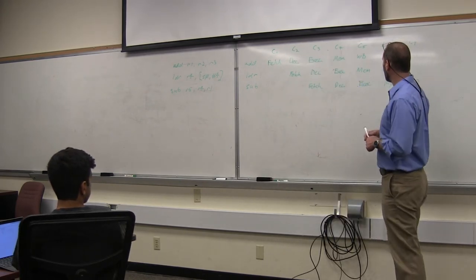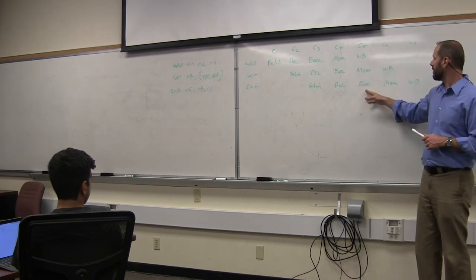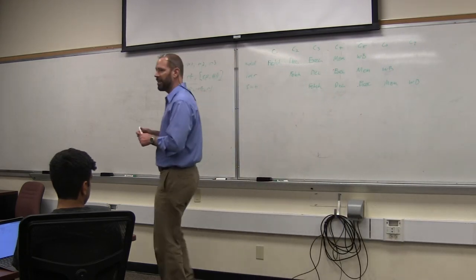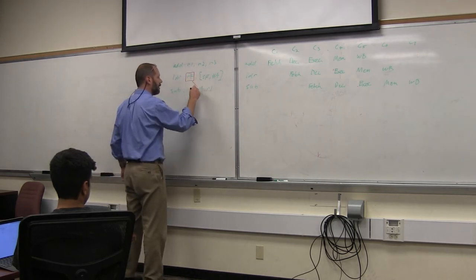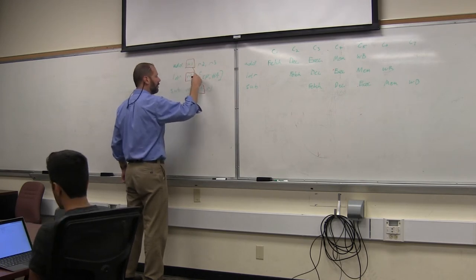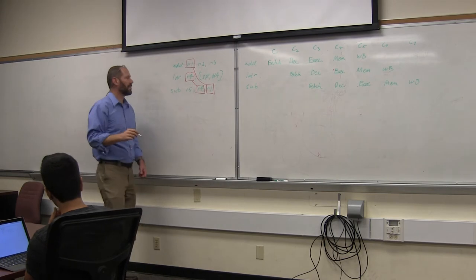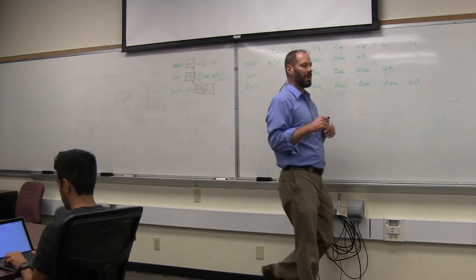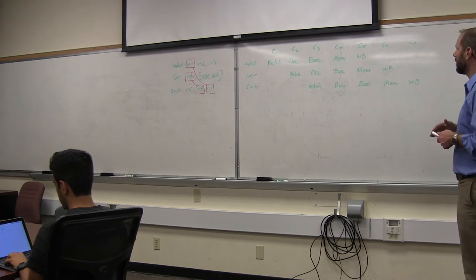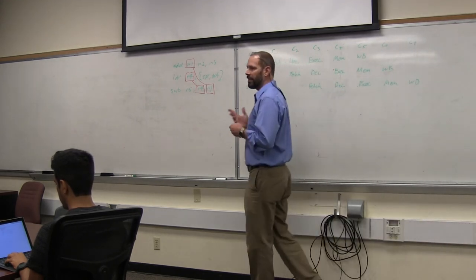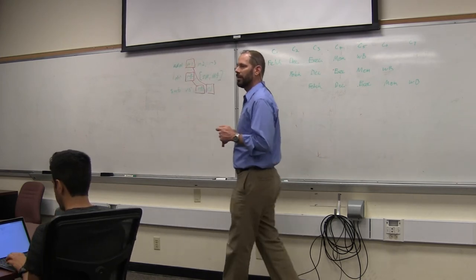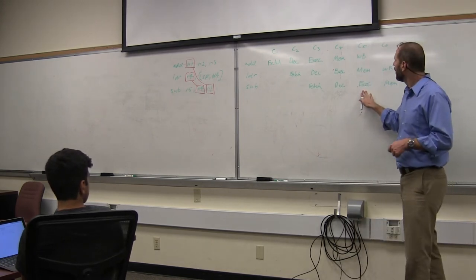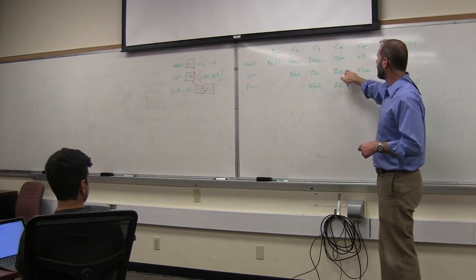So, in cycle five, when the subtract instruction is in the execute stage, right, we are still in the presence of two data dependencies, just like in the previous example, but this one is different. Why is it different? Well, in the previous example with the add sub XOR code, all of the results that we wanted were being generated by the ALU stage, the execute stage of the pipeline. The load is fundamentally different. Why?